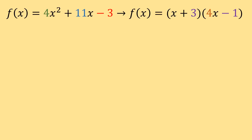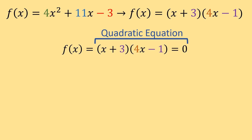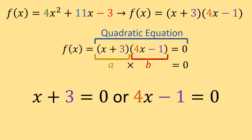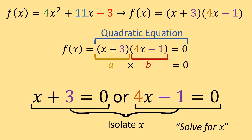Let's look at the function f of x equals 4x squared plus 11x minus 3, which factors to f of x equals the quantity x plus 3 times the quantity 4x minus 1. For both directions, we set our function equal to 0. On the right side, x plus 3 times 4x minus 1 equals 0 is just a quadratic equation, so we treat x plus 3 as a and 4x minus 1 as b. Since a times b equals 0, then x plus 3 equals 0 or 4x minus 1 equals 0. Now we isolate x.